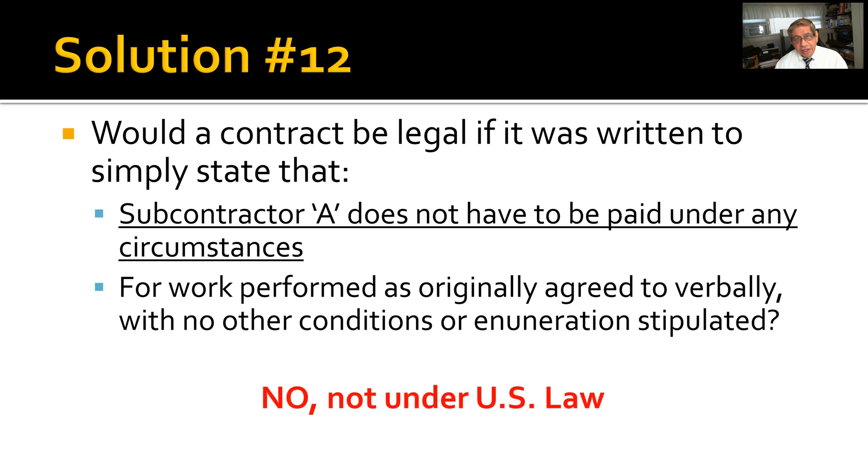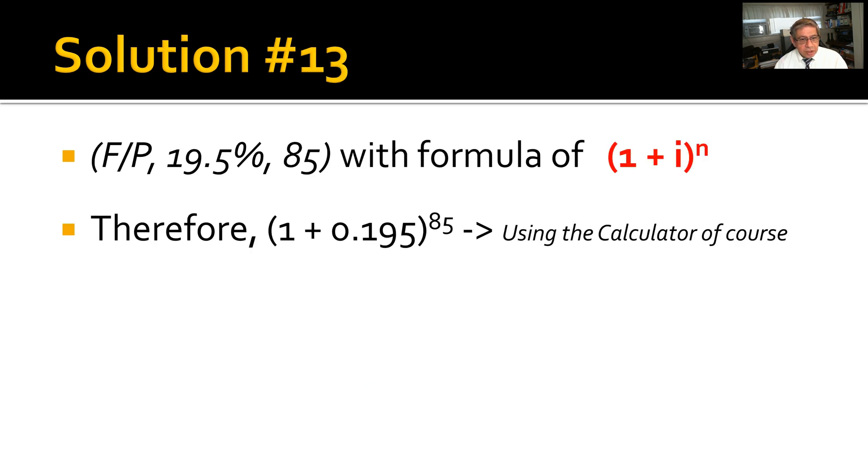No, that is not legal in U.S. law. Now I'm not a lawyer—read out a textbook so you can look this one up. Solution number 13: You use future given present calculation, but this is not something you're going to find in the table. The formula for this one is (1 + i)ⁿ, the n being the number of years, or 85.